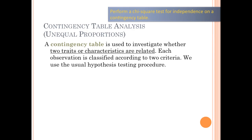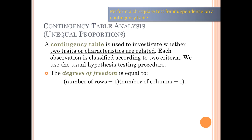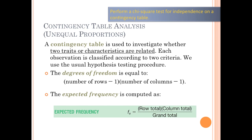Now we have contingency table analysis, also called a chi-square test for independence. A contingency table is used to investigate whether two traits or characteristics are related — each observation is classified in two ways rather than one. The goodness of fit test has only one classification, but the test for independence always has two or more. Degrees of freedom are calculated differently: it's the number of rows minus one times the number of columns minus one.